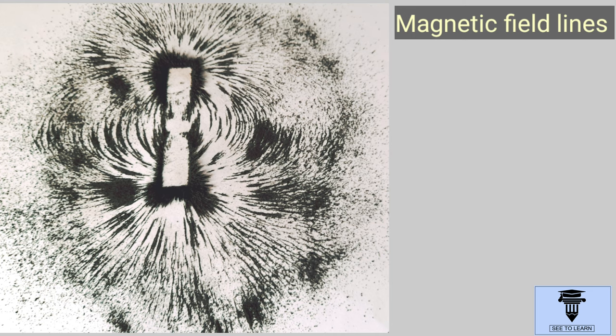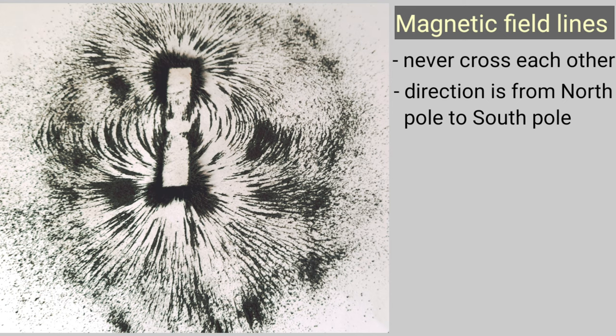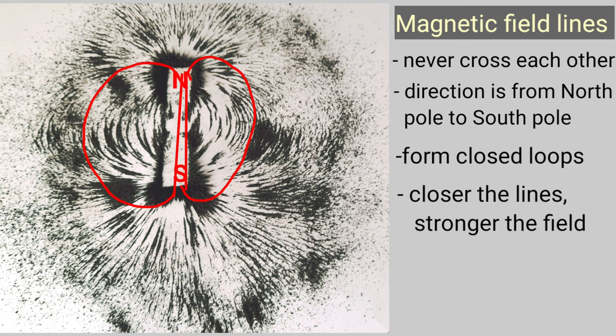Now, you can see here that no two field lines cross or intersect each other. Their direction is conventionally taken from north pole to south pole. Thus, they form closed loops. Closer the field lines, stronger is the magnetic field. Since the lines are very close at the poles, the magnetic field is stronger over here.